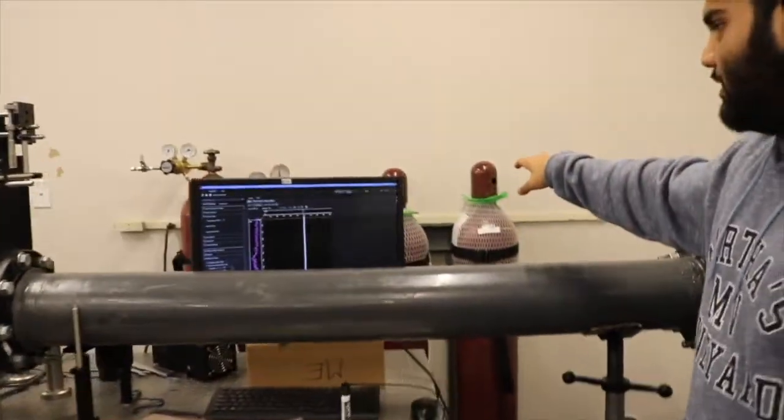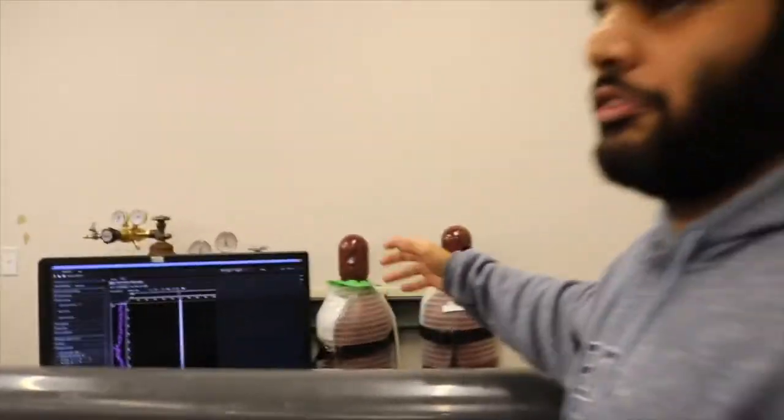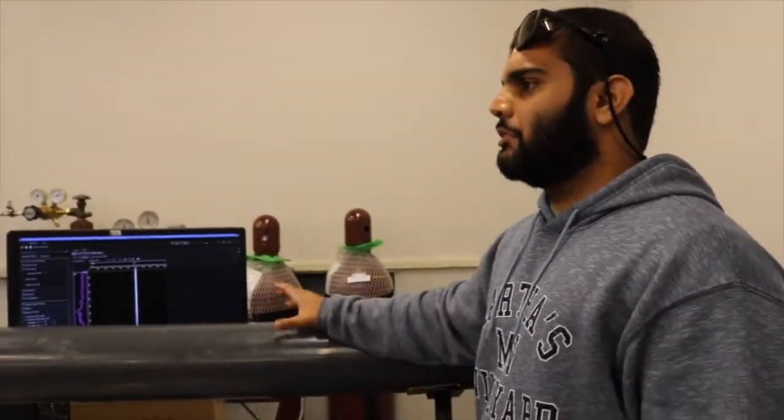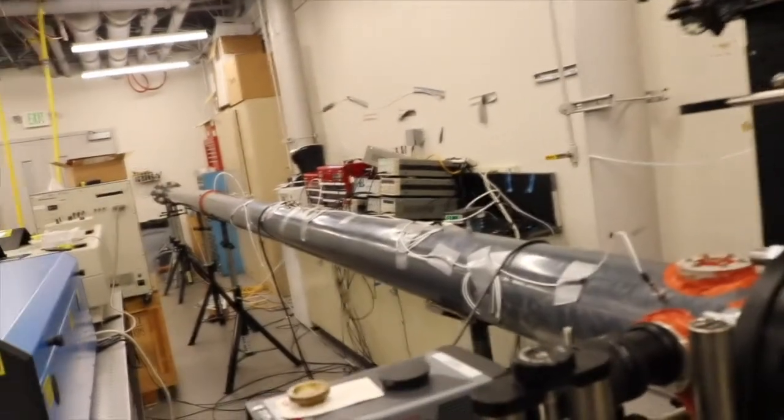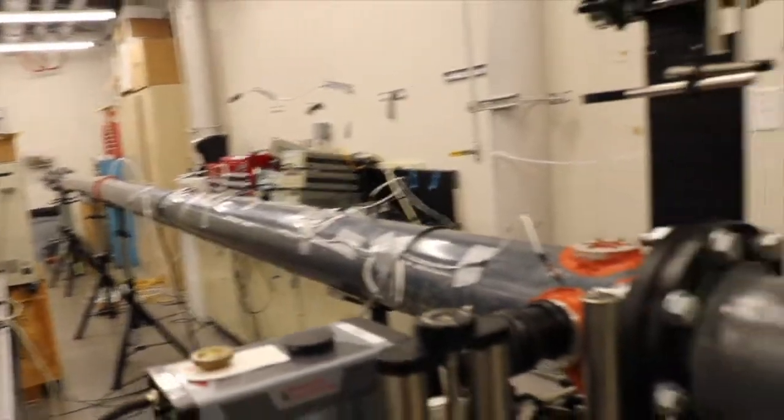And over here we have the different gas mixtures. So in order for the technique to work, we need to insert Krypton into the flow field. And the way we do that is we get mixtures of Nitrogen and Krypton and Nitrogen-Oxygen and Krypton depending on if you want to study air or just Nitrogen. And then we feed that into our driven section, which is our test section in this case. Then we pump it down to a low pressure and we run the experiment.